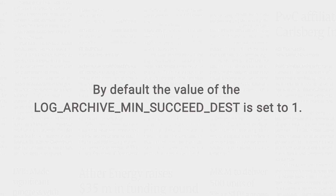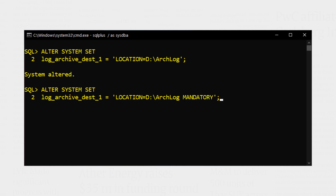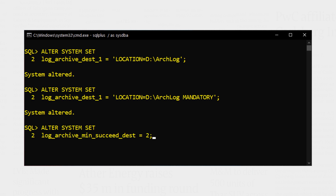By default, the value of this parameter is set to 1, meaning online redo logs are considered archived successfully only when the archiver process creates a valid copy of online redo log files into at least one archive log destination directory. You can change the value of this parameter to any number between 1 and 10. On successful execution, the number of directories that need to have a valid copy of online redo logs to be called successfully archived will be 2. Let's execute. Done.